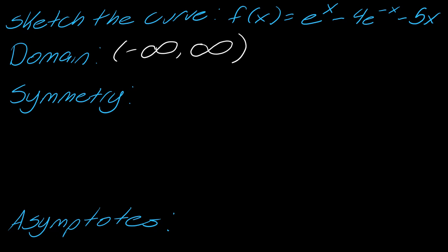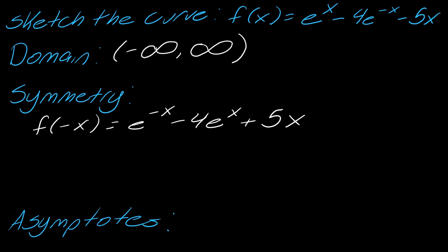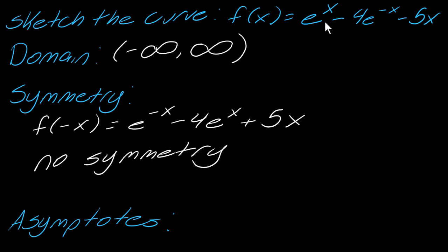And then for symmetry, if I go ahead and do this test, this is going to come out as e to the negative x minus 4e to the positive x plus 5x. And so there is really no symmetry from that test. And then for the asymptotes, if you try to think about taking the limit as x goes to positive or negative infinity, you're not going to have any asymptotes here. This is not going to tend to anything, and since the domain is all real numbers, there are going to be no asymptotes.